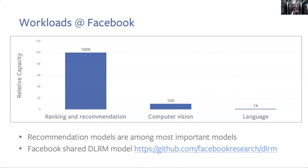Recommendation models are definitely some of the most important models. As we looked at the research happening particularly in academia, that research was really centered on computer vision and language, and not so much the piece that we're interested in. We discovered it's because the data sets and benchmarks for the models aren't available. So we've opened our deep learning recommendation model — it's available on GitHub — to encourage research in these areas.